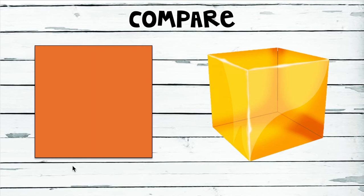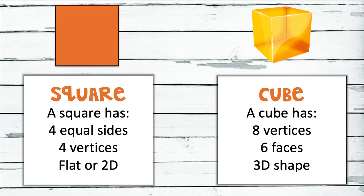We can compare flat shapes to 3D shapes. How are these shapes alike? How are they different? Pause the video to think about all the ways they're alike and different. Hopefully you named these shapes as a square and a cube. A square always has four equal sides, four vertices, and is flat or two-dimensional. While a cube looks like it, but it's three-dimensional because it has six different faces. All of the faces are squares and there are six of them. It has eight vertices.